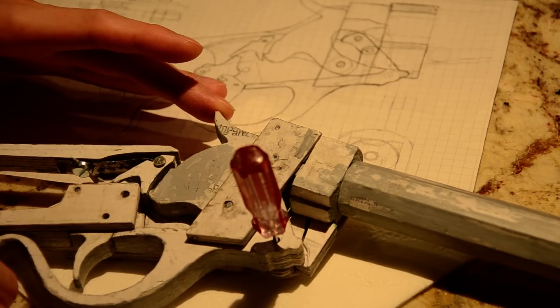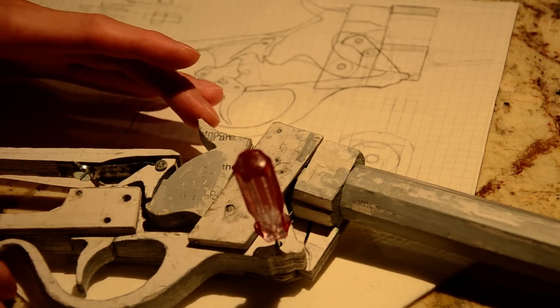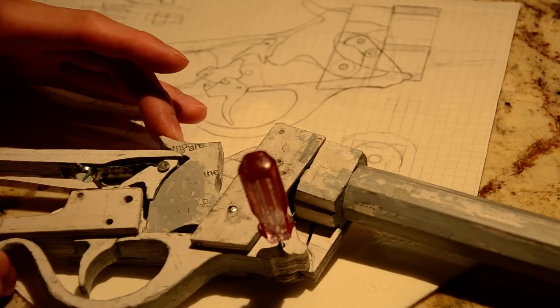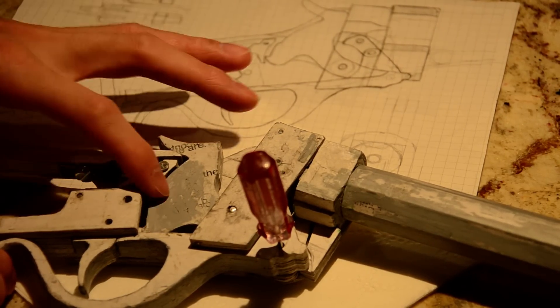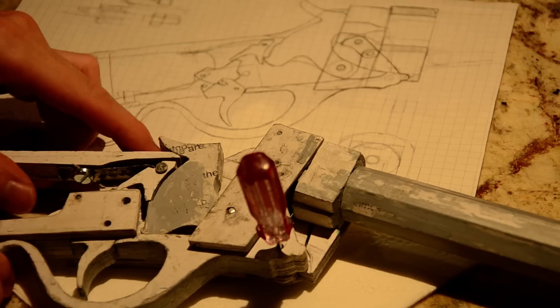So when you cock the hammer, you have the half cock, and then you have the full cock. And the sear engages the notch on the hammer that basically locks it in place.